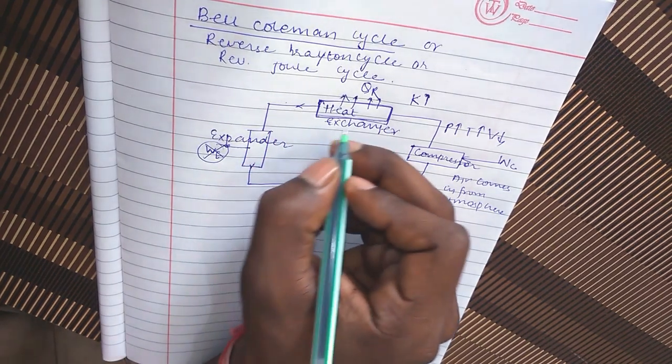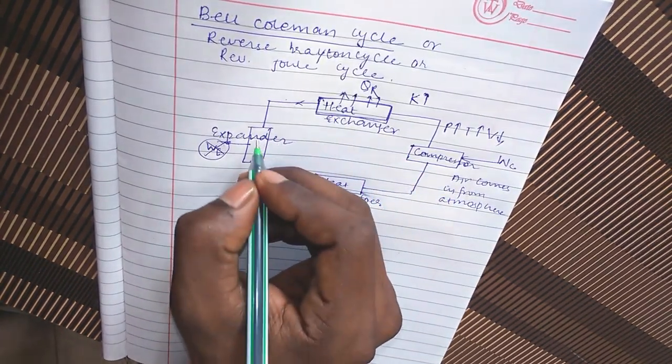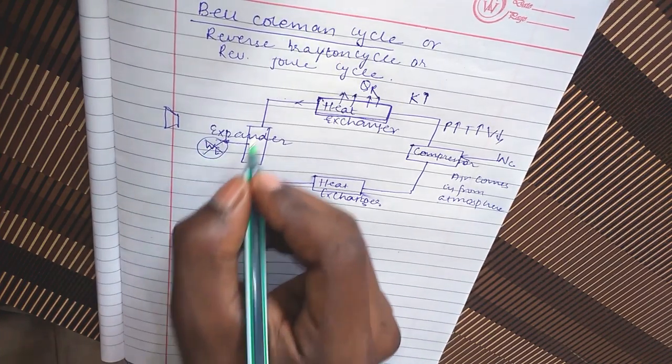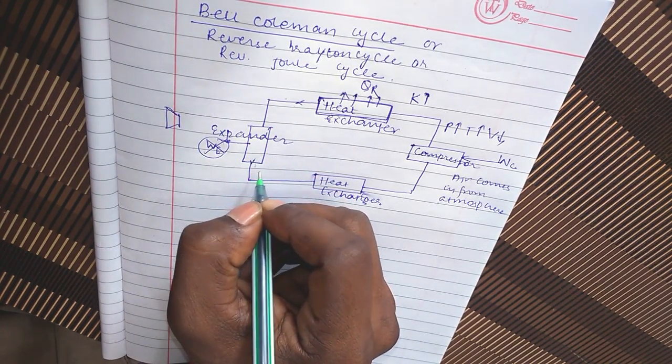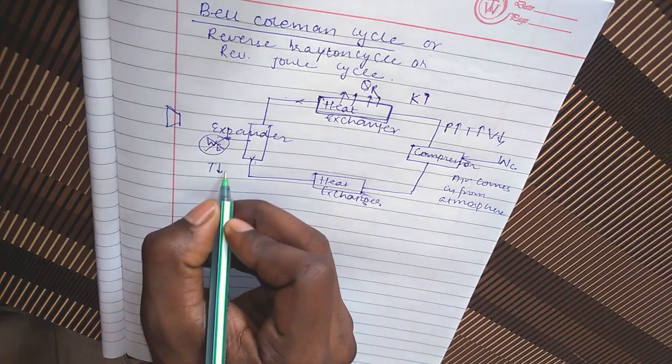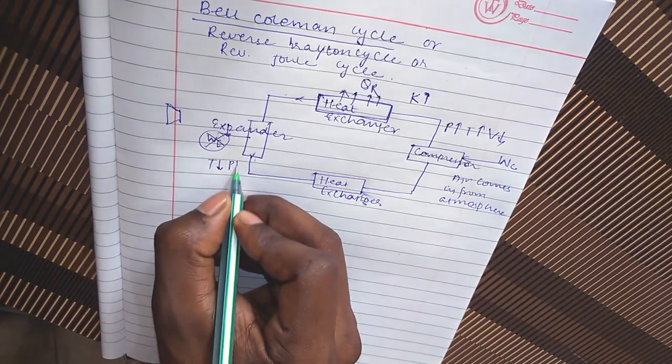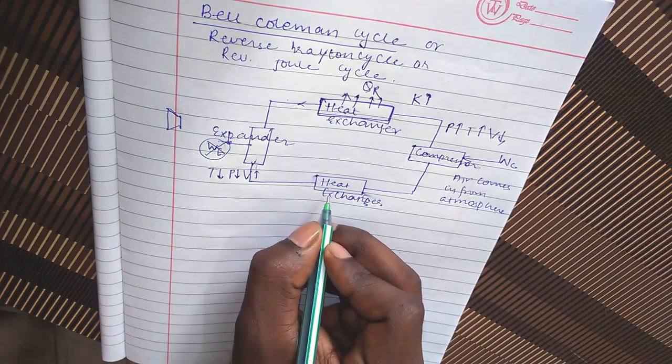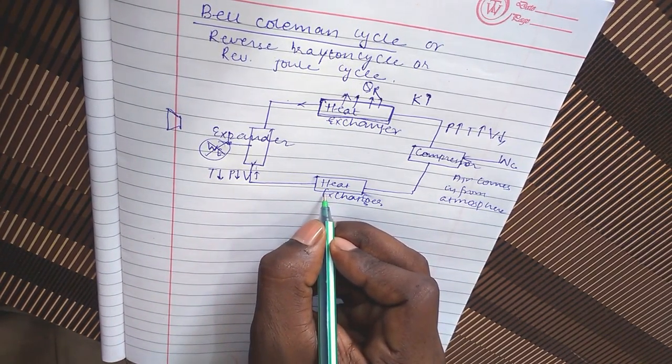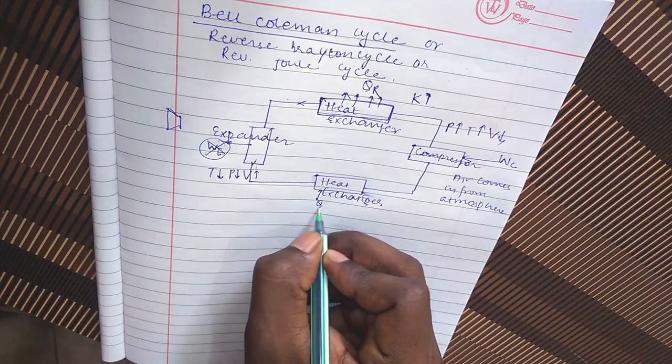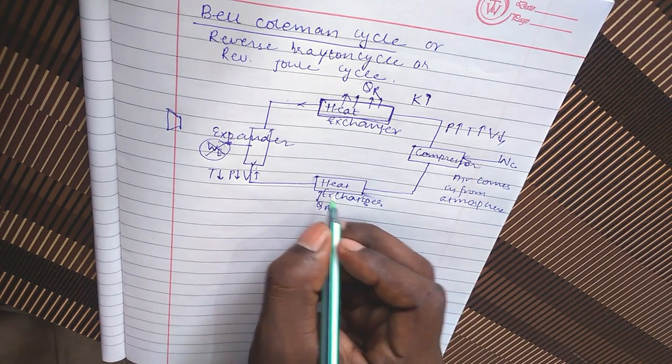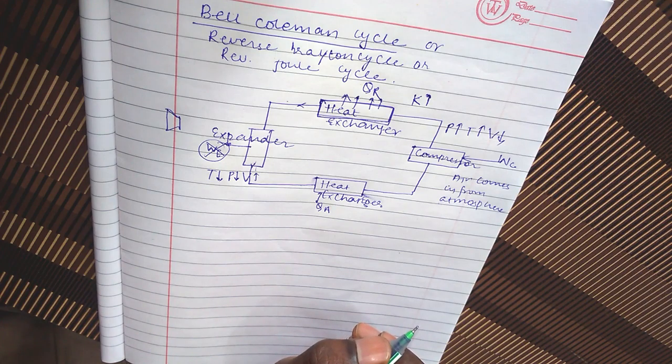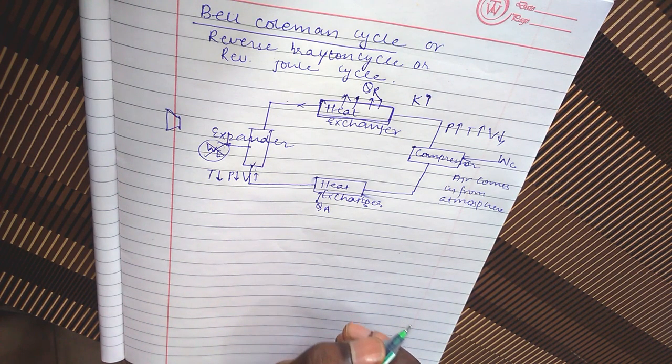When it comes out from the heat exchanger it goes to the expander with higher pressure, it expands over here. Volume increases suddenly so the temperature falls down, pressure falls down, volume increases. After this it goes to the heat exchanger where heat is added and then further the same cycle is repeated. This is Bell Coleman cycle.